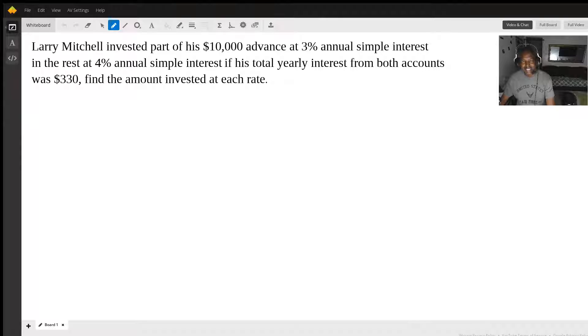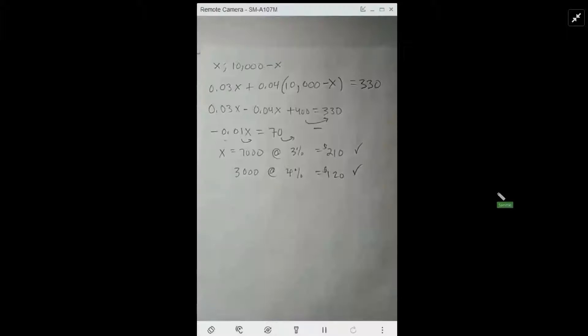Hi, this is Sammy W with the answer to the following question: Larry Mitchell invested part of his $10,000 advance at 3% annual simple interest and the rest at 4% annual simple interest. If his total yearly interest from both accounts was $330, find the amount invested at each rate. Let's look at the other window.